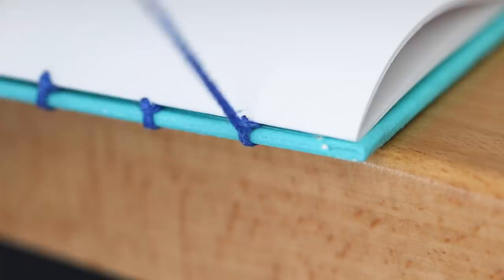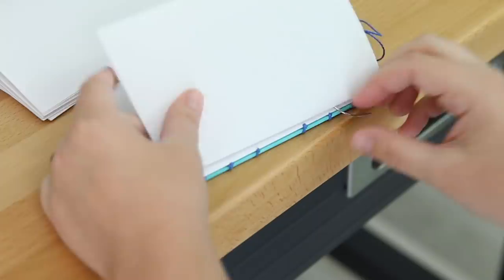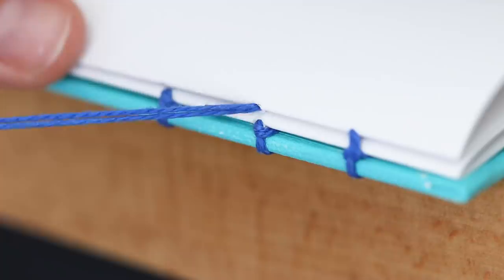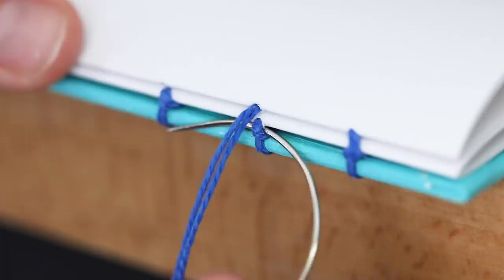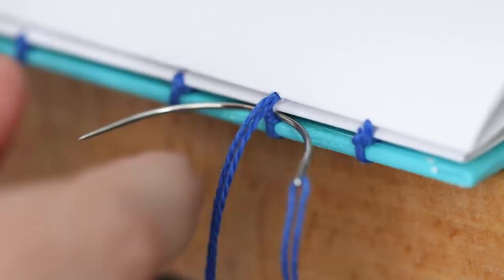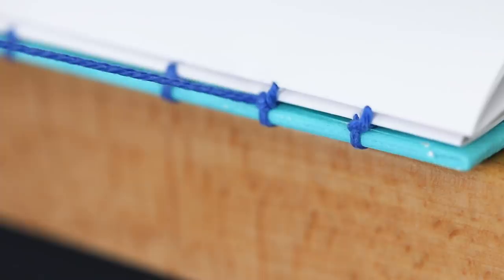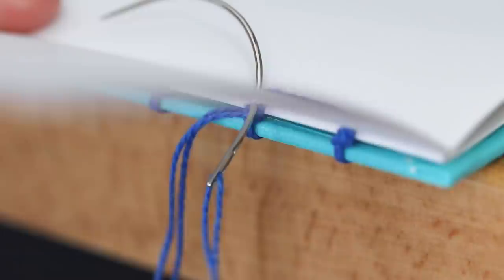When you reach the last one, loop behind as you usually would, and then you're going to return the needle into a new signature. Pull through the next binding hole to the outside, then you're going to go underneath the previous signature stitch, looping around behind, making sure the needle doesn't go through any of the thread. It goes directly behind the stitch, and back into the new signature.